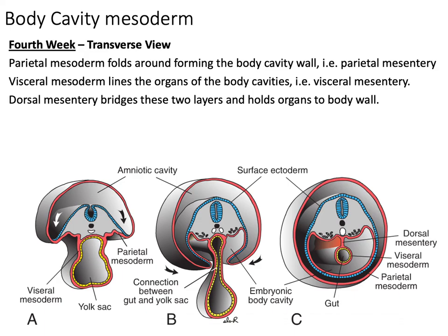You've likely seen this slide before — during the fourth week, body cavity mesoderm. The mesoderm is one of the three layers of gastrulation that gives rise to our body structure; we have endoderm, ectoderm, and mesoderm. Mesoderm primarily relates to the body's musculature and linings. We have our parietal mesoderm, shown in red, which goes on to be our parietal mesentery forming our body cavity wall. Then we have visceral mesoderm, which lines the organs of our body cavities and lines the yolk sac. The dorsal mesentery bridges these two layers.